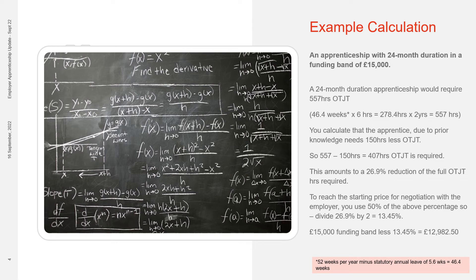So taking initial assessment findings into account, you calculate that the apprentice, due to prior knowledge, needs 150 hours less off-the-job training. So the full 557 hours minus 150 hours equals 407 hours of off-the-job training over the two-year duration apprenticeship. This amounts to a 26.9% reduction of the full off-the-job training hours required — that's 150 hours divided by 557, giving you your 26.9% reduction.